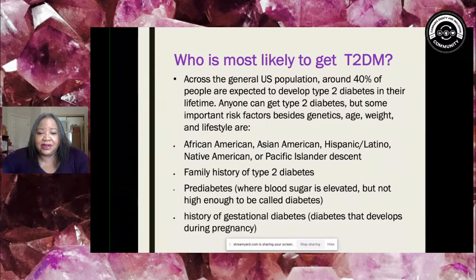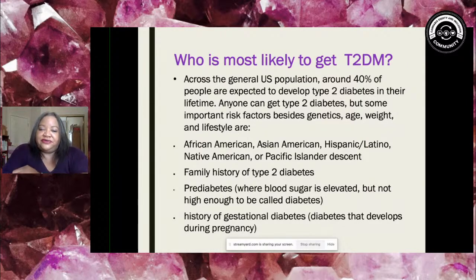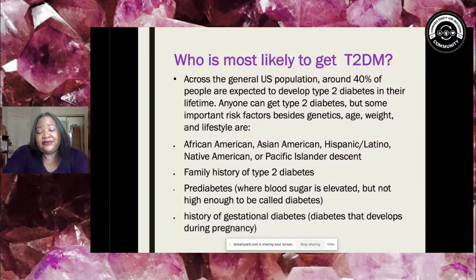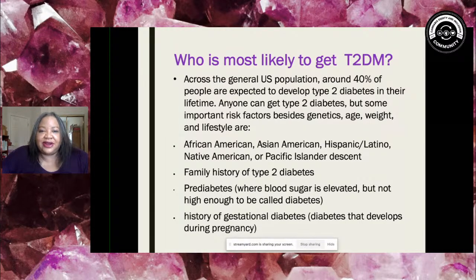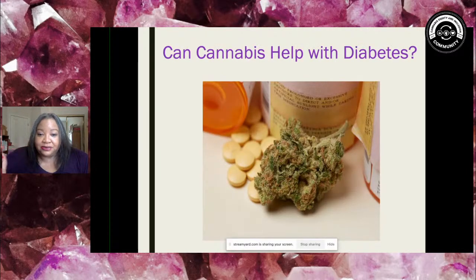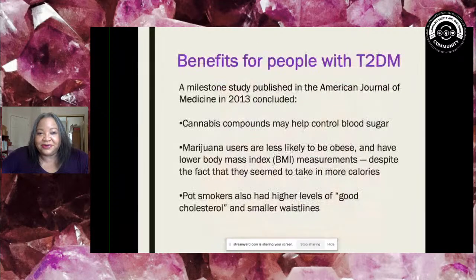Those most likely to develop type 2 diabetes include African Americans, Asians, Hispanics, Latinos, Native Americans, and Pacific Islanders, as well as Caucasian Americans who are at risk. Other risk factors include family history, having pre-diabetes — meaning you're on the path to type 2 — and a history of gestational diabetes.